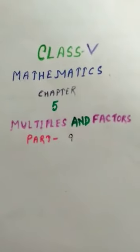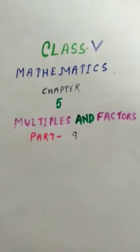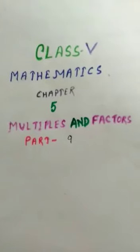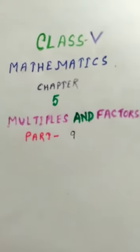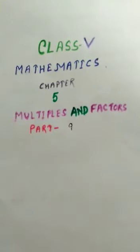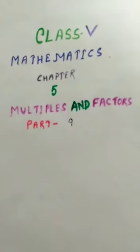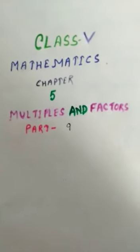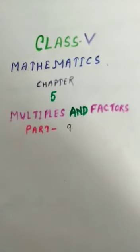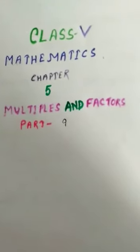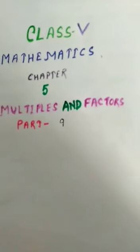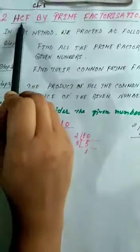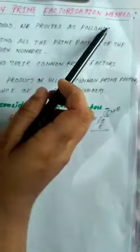Hello, dear children. Today we are going to continue chapter number 5, that is Multiples and Factors. We are solving exercise questions from 5.4, and we have done up to question number 1. Today we are going to solve from question number 2 onwards. We have learnt how to find the HCF by factorization method, so before starting question number 2, we need to know how to find the HCF by prime factorization method.